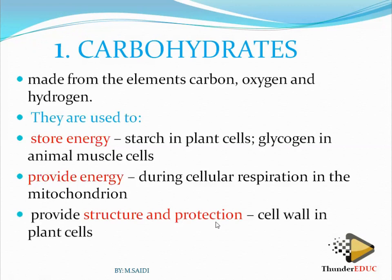Number three, carbohydrates provide structure and protection for the cell. They make up the structure of the cell and also provide protection. For example, the cell wall in plants is made up of cellulose, and cellulose is an example of a carbohydrate. Therefore, carbohydrates can also be used for structure and protection.